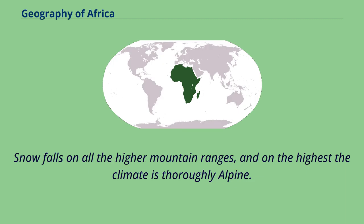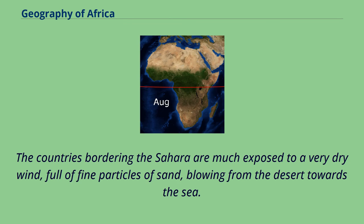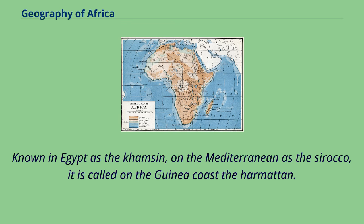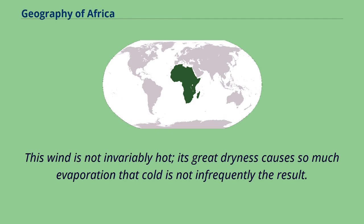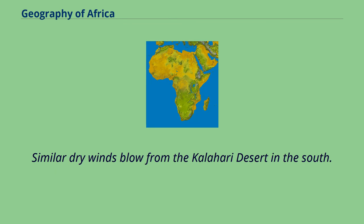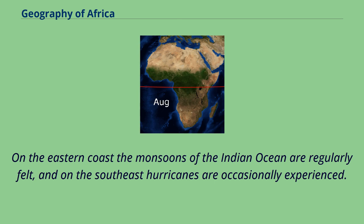Snow falls on all the higher mountain ranges, and on the highest the climate is thoroughly alpine. The countries bordering the Sahara are much exposed to a very dry wind, full of fine particles of sand, blowing from the desert towards the sea. Known in Egypt as the Khamsin, on the Mediterranean as the Sirocco, it is called on the Guinea coast the Harmattan. This wind is not invariably hot; its great dryness causes so much evaporation that cold is not infrequently the result. Similar dry winds blow from the Kalahari desert in the south. On the eastern coast the monsoons of the Indian Ocean are regularly felt, and on the southeast hurricanes are occasionally experienced.